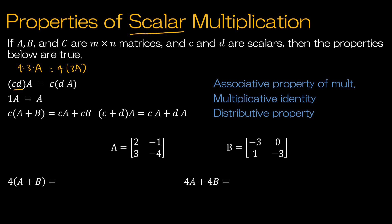1 times A is equal to A — that's the multiplicative identity. In the same way we can say 1 times 5 is equal to 5, 1 times a matrix A is going to be the same matrix A. And finally, we have the distributive property, which can work one of two ways: you're either distributing a scalar C to two matrices, or distributing a matrix A to two scalars. We'll show one example.